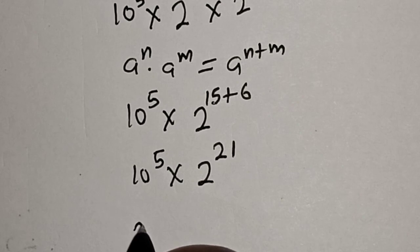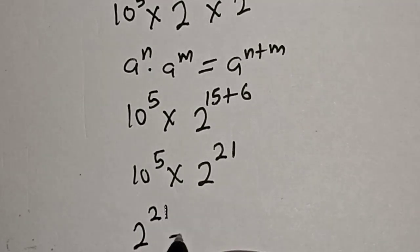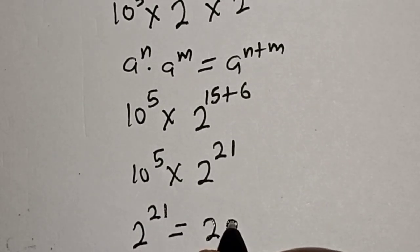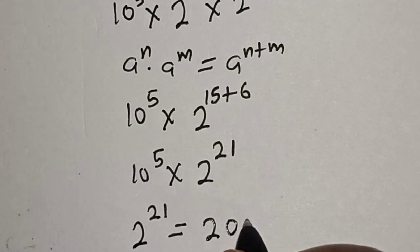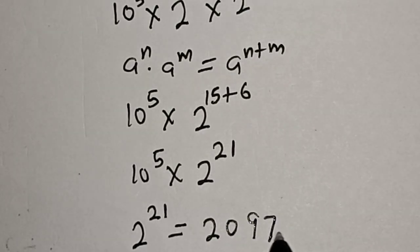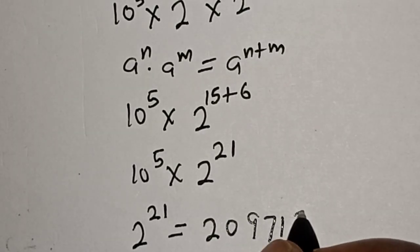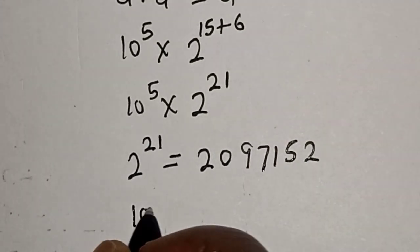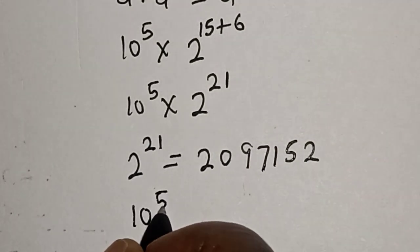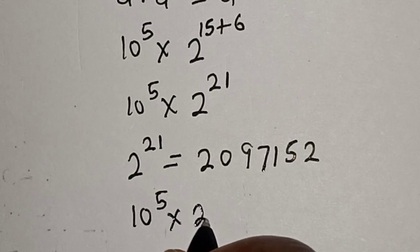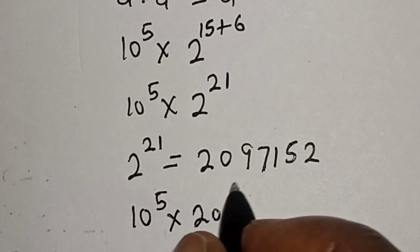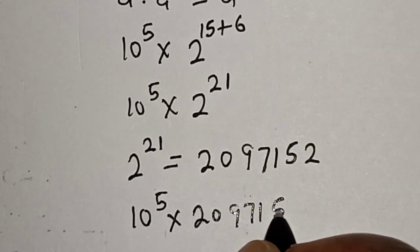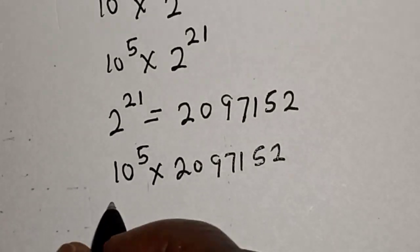So we have 10 raised to power 5 multiplied by 2 raised to power 21. Now 2 raised to power 21 is equal to 2,097,152. Then we have 10 raised to power 5 multiplied by 2,097,152.